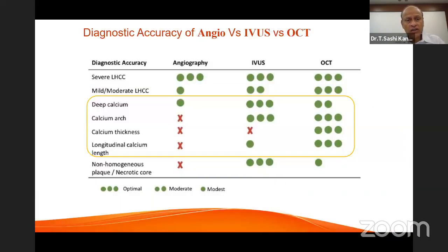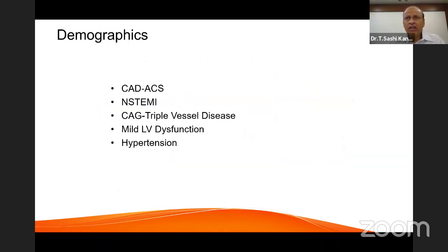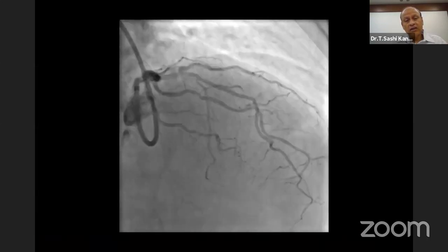The diagnostic accuracy of angiography is quite limited with severe calcium. For mild-to-moderate calcium, deep calcium, the degree of calcium arc, calcium thickness, and longitudinal calcium length, angiography is a poor diagnostic tool. IVUS and OCT score above angiography, with OCT clearly superior to IVUS in calcium assessment. Proper calcium assessment is very important to decide on plaque modification techniques for optimal long-term results. Here is a patient with acute coronary syndrome, an NSTEMI, triple vessel disease, mild LV dysfunction, and hypertension — with a significant lesion in the proximal-to-mid LAD across the diagonal.